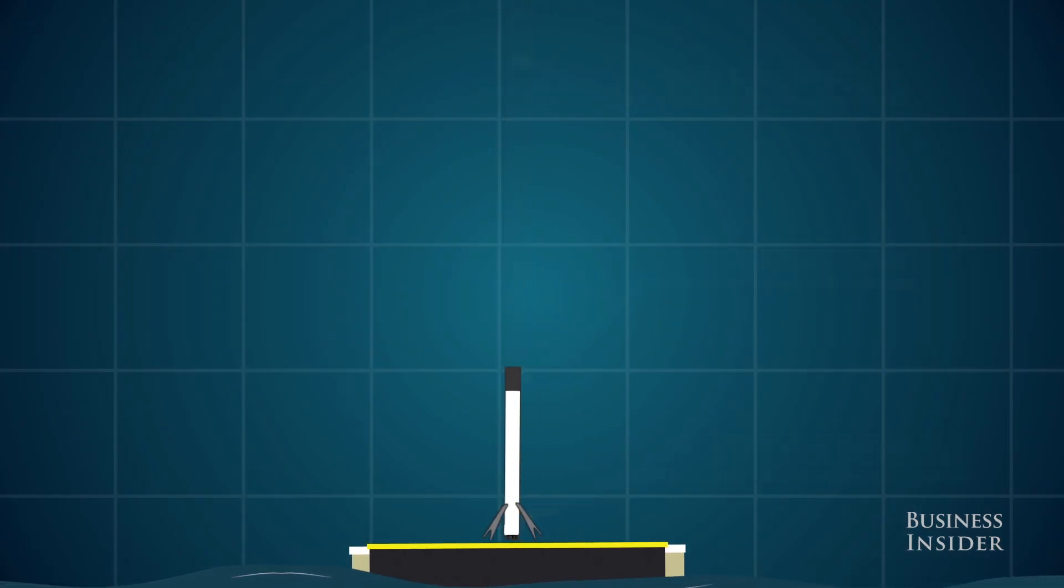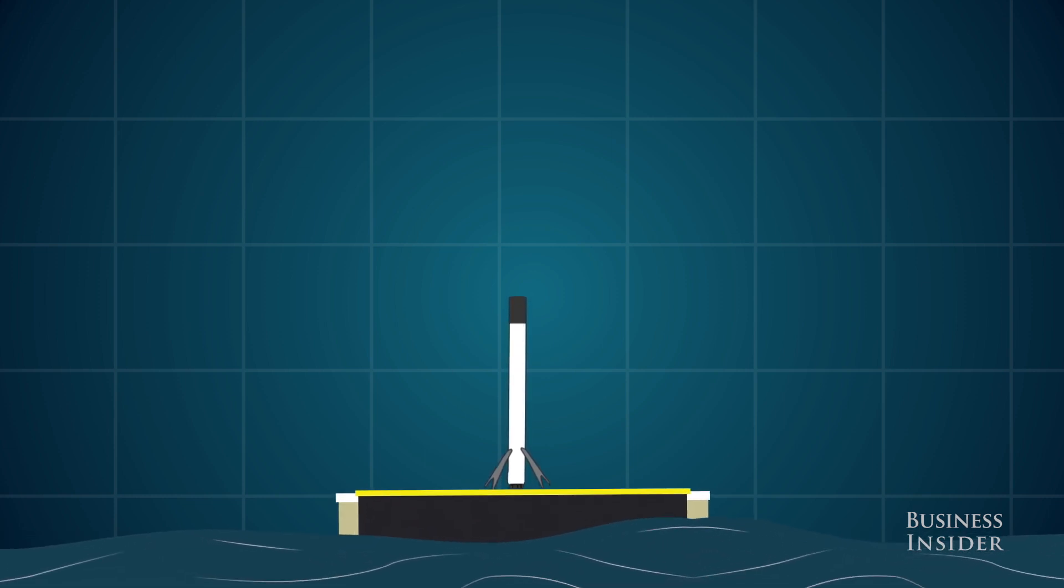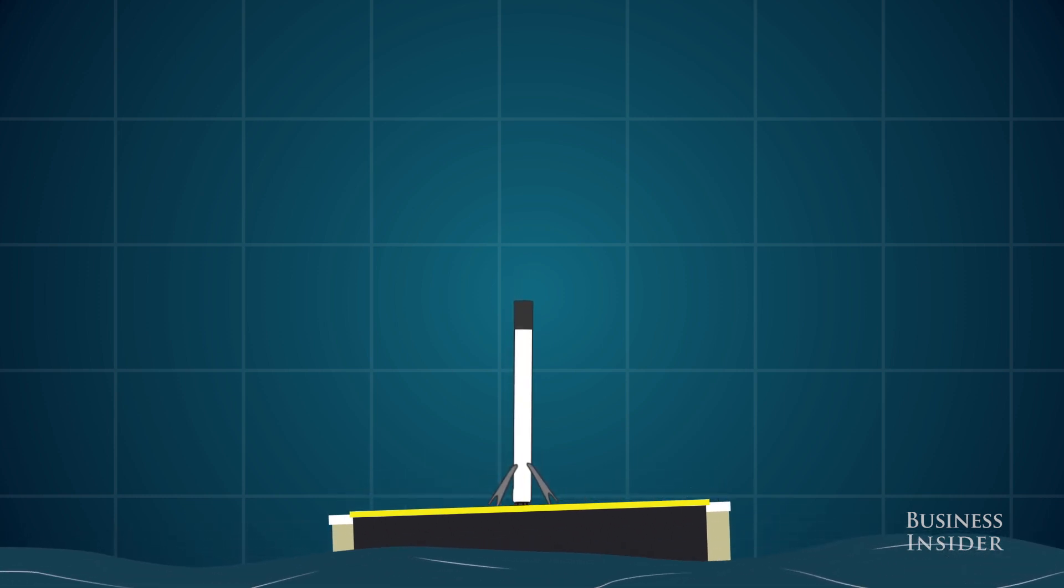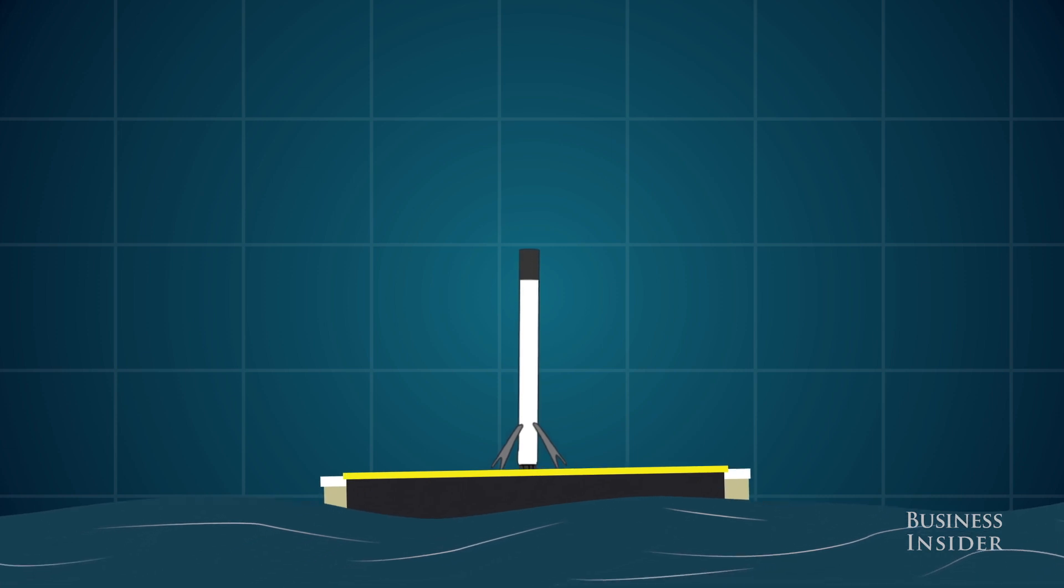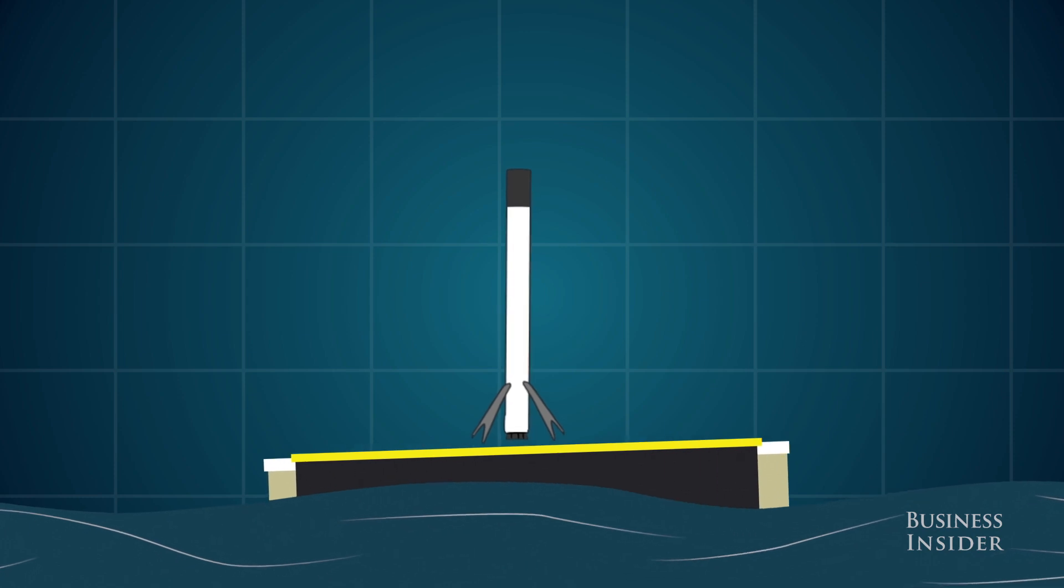After that, the barge sails back to shore where the rocket can, in theory, be refueled and relaunched within a matter of hours, saving SpaceX from the months it takes and tens of millions of dollars it costs to build a new first stage rocket.